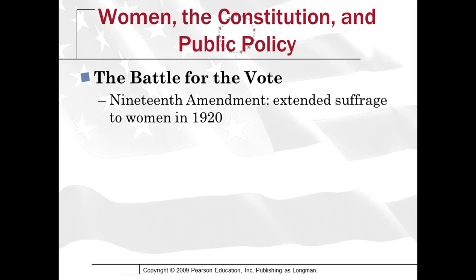One of the reasons the ERA didn't pass is because the Supreme Court began to interpret the 14th Amendment to include gender — although it doesn't explicitly include gender, and the Court could easily interpret it the other direction, which would likely renew discussion about an Equal Rights Amendment. But in the 50s and 60s, groups like the National Organization for Women and the National Women's Political Caucus organized and began fighting for women's rights.